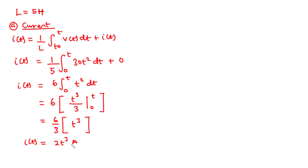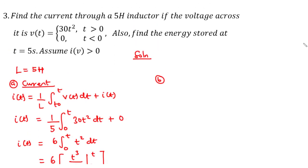The current expression is i(t) = 2t³ when t is greater than zero. Next we want to find the energy stored at t equals 5 seconds.